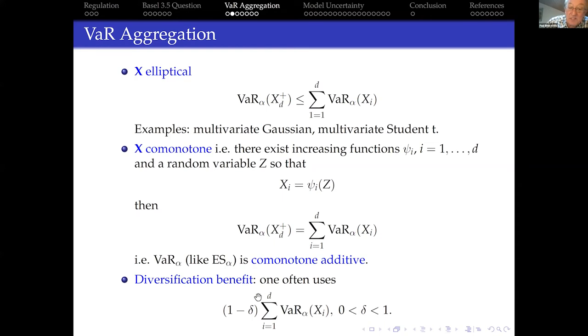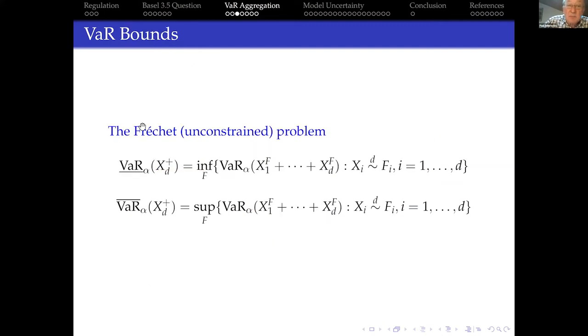The diversification benefit, this is what banks were always hoping that they could achieve: we can reduce this upper bound by a certain diversification factor. And my question was always then, well, what do you mean by diversification? I think that question should always be asked. There's quite a lot of uncertainty around that. Now, this brings us to Maurice Frechet and what I call the unconstrained problem.